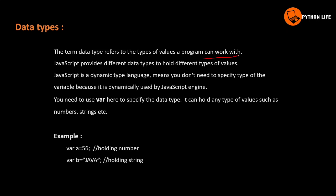JavaScript provides different datatypes to hold different types of values. JavaScript is a dynamic type language, which means you don't need to specify the type of a variable because it is dynamically handled by JavaScript.